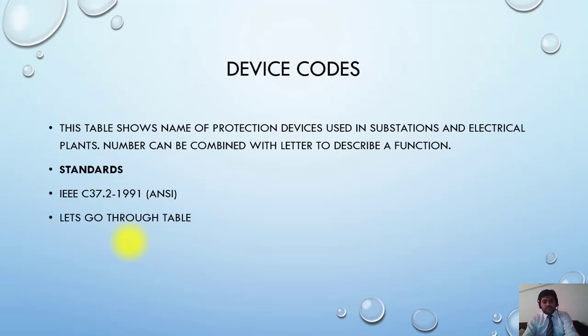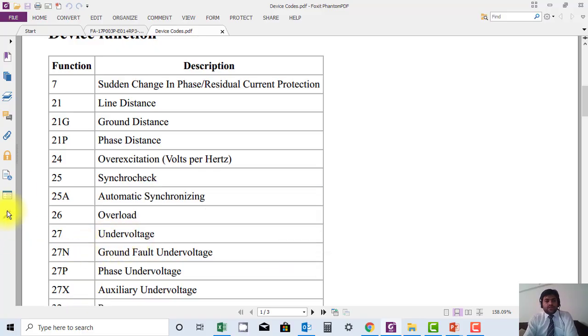Let's go through the table. Here you can see the function code and the description. For example, code 7 is sudden change in phase or residual current protection. Code 21 is mostly used in control and protection drawings of substations. This is line distance relay. Code 21G is used for ground distance, 21P is used for phase distance.